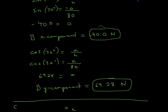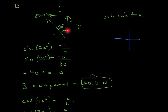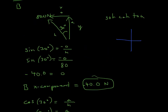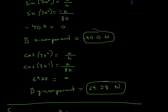Continuing on, for the y-component of B I used cosine of 30 degrees — adjacent over hypotenuse — and plugged in the hypotenuse of 80. Multiplying by 80 gives 69.28. Now checking if it's positive or negative: it's pointing up, so it's positive. Units are Newtons, and I put four sig figs here to avoid a rounding error.